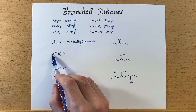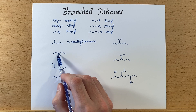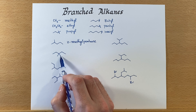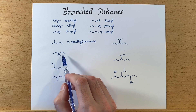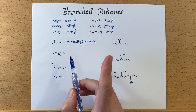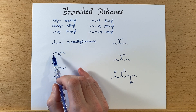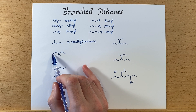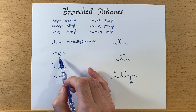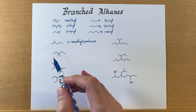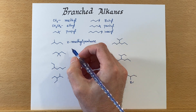Next, very similarly, we have one, two, three, four, five carbons counting this way; counting the other direction only goes to four. So this is also a pentane. It doesn't matter which direction we start counting — the branches both land on the third carbon, and there are two methyls. So this is 3,3-dimethylpentane.